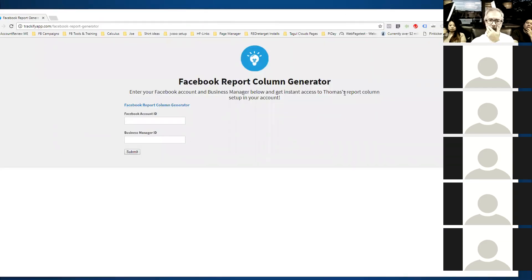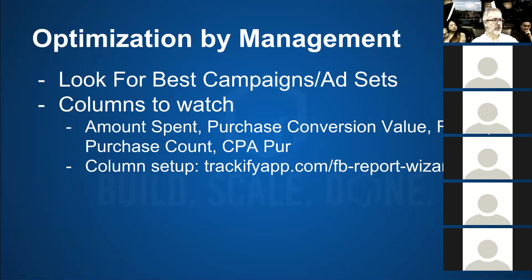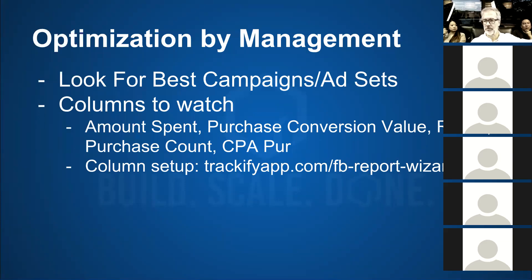This is the report generator. The way it works is you come in here, put your Facebook account ID in, put your business manager ID in, and hit submit. This will open up your Business Manager inside that ad account — you go to Ads Manager and you'll have all the report columns laid out exactly the way that I like it. This tool comes in handy whenever you set up a new account or go to look at a different account — just put the account ID and business manager ID in, click submit, and the columns all show up the way I like them.